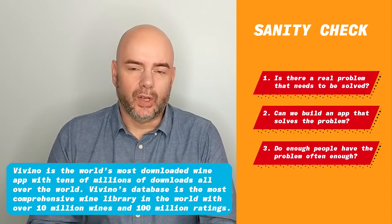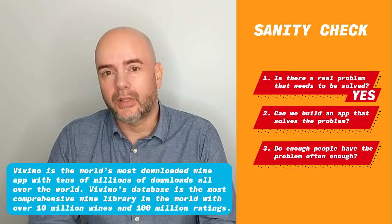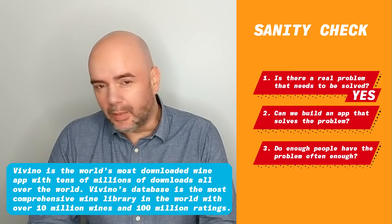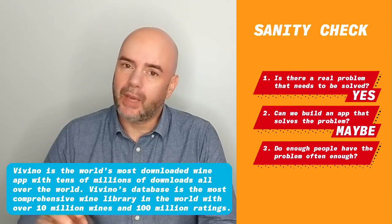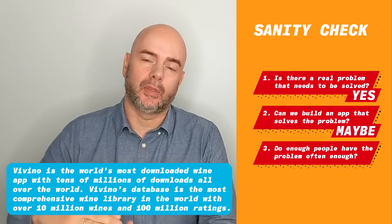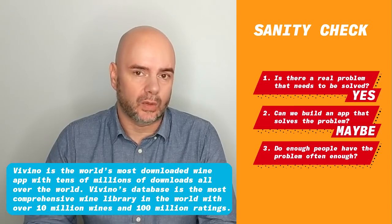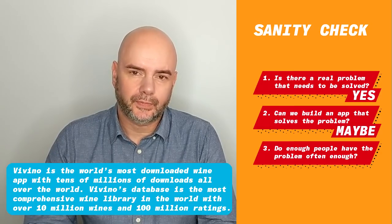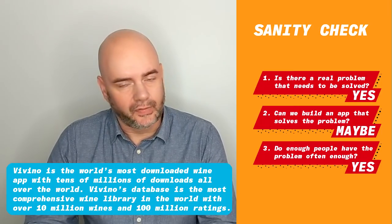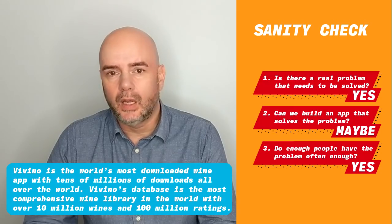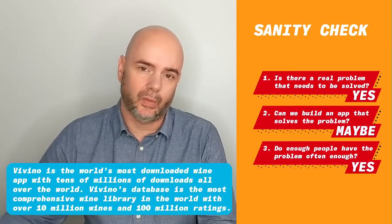Let's try this with Vivino. Number one: yes, there is definitely a need — a lot of people have this problem. Number two: Vivino was a little bit of a maybe. We actually weren't sure we could build it — could we build the data, the reviews and ratings? Now eight years later we have a hundred million ratings, so we got it, but that was a gamble. Number three: is the problem frequent enough for enough people? Definitely — people are in the supermarket looking for wine and can't figure out what to buy. Everybody has this problem, frequently, maybe every day or every week.